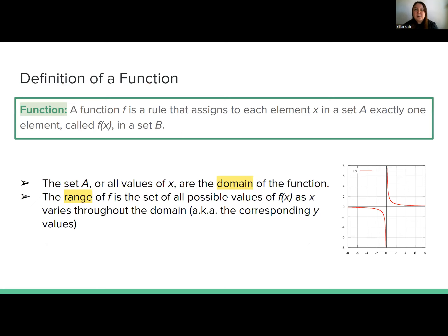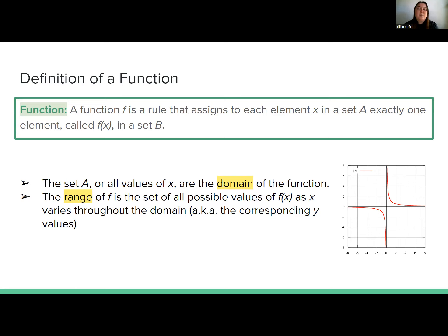For our actual mathematical definition of a function, a function f — we will almost always describe functions with f, occasionally g or h, but typically we write functions as f or f of x. A function f is a rule that assigns to each element x in a set A exactly one element, which we call f of x, which is in set B.